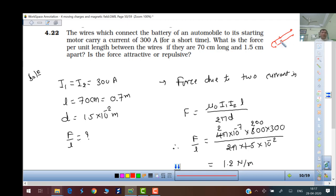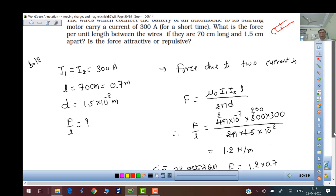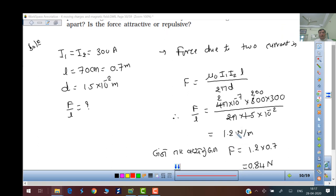When it comes to force, the formula is mu0 i1 i2 L upon 2 pi d. Current 300, 300 in each, length is given in centimeters. Force per unit length, F upon L is shown. So 4 pi times 10^-7 times i1 i2 upon 2 pi d. 1.5 centimeters converted into meters.